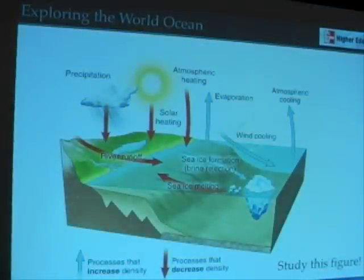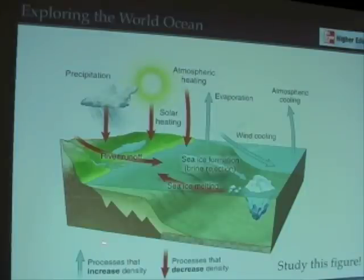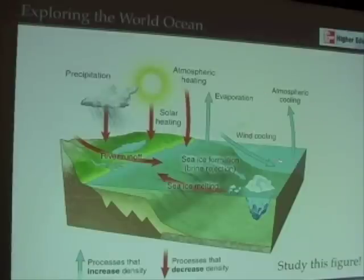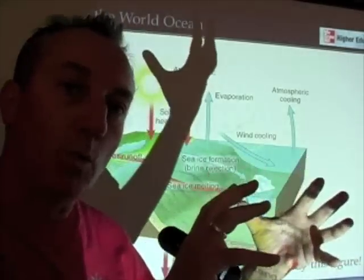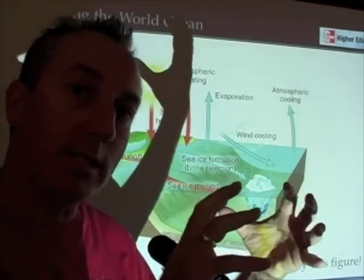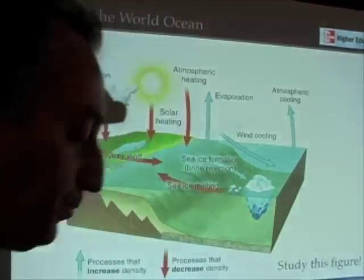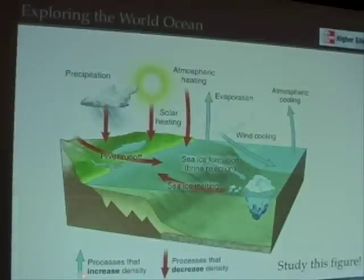What I just explained covers everything in figure 7-18 in your book. Let's look at processes that increase the density of seawater. If the atmosphere or winds are cooling the surface of the ocean, it's becoming more dense. Even an iceberg floating from one place to the next is cooling the water it encounters, and in doing so it's increasing that water's density — making it more dense.